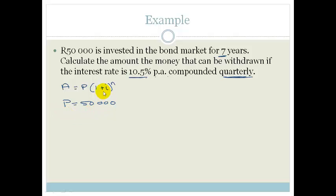But now we need to think about the interest and the number of payments. Our interest is 10.5 divided by 100, which is 0.105. But it's compounded quarterly, which means that it's paid four times a year.